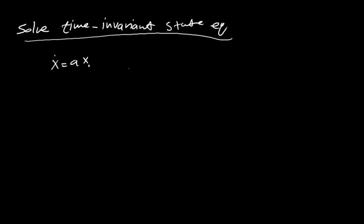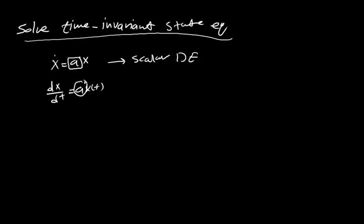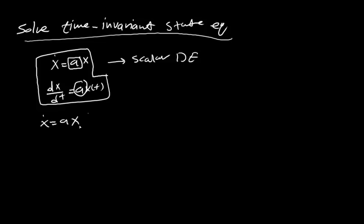This is a scalar differential equation. It is scalar because x is one dimension — a scalar number. So dx/dt equals a*x(t). It is time-invariant because 'a' is not a function of time, it is constant. The state equation is a first-order differential equation where 'a' is constant, so it is time-invariant and scalar because x is one-dimensional and 'a' is just one value — not a matrix, not a vector.